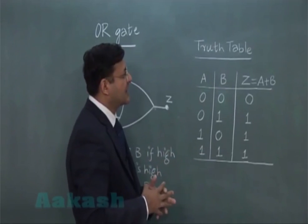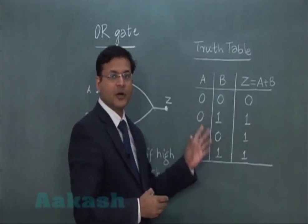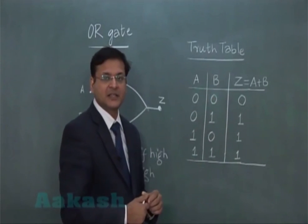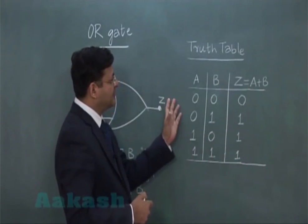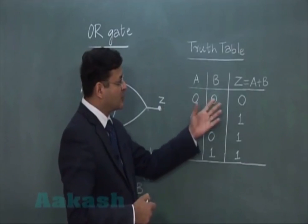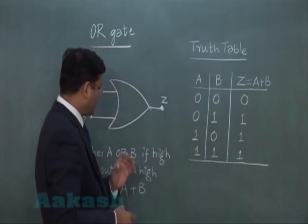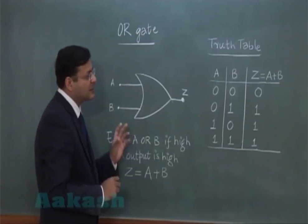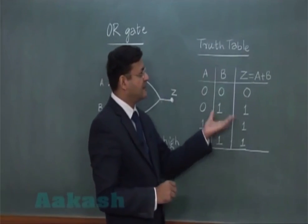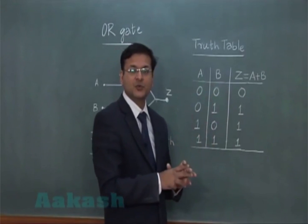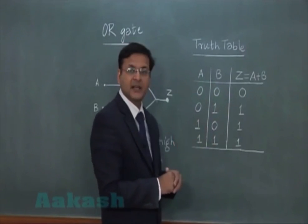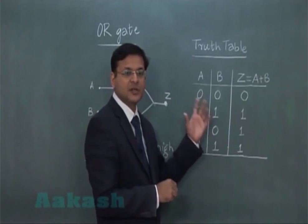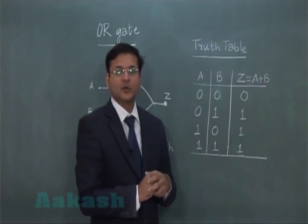You see, this is the kind of truth table you are obtaining for OR gate. Now see the output signals which you are getting, that tells you that if one of them is higher, then output is higher. That is what is the logic you have written, either A or B, if high, then output is high. That particular logic is satisfied if you are simply adding these two signals at the entry point. Only when both the signals are low or 0, then only you can see the output is low.